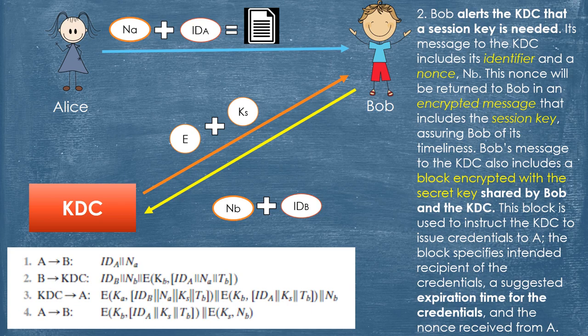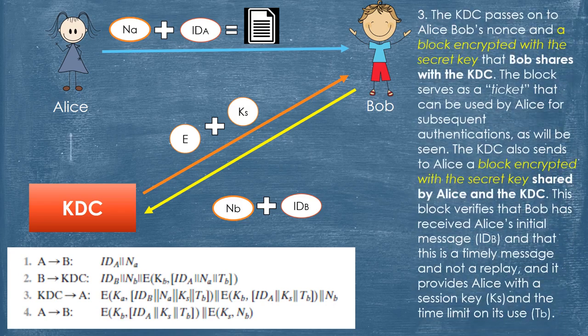The block specifies the intended recipient of the credentials, a suggested expiration time for the credentials, and the nonce received from Alice. Step 3: The KDC passes on to Alice Bob's nonce and a block encrypted with the secret key that Bob shares with the KDC. The block serves as a ticket that can be used by Alice for subsequent authentications. The KDC also sends Alice a block encrypted with the secret key shared by Alice and the KDC, verifying that Bob received Alice's initial message and that this is a timely message and not a replay. It also provides Alice with a Session Key and the time limit on its use.